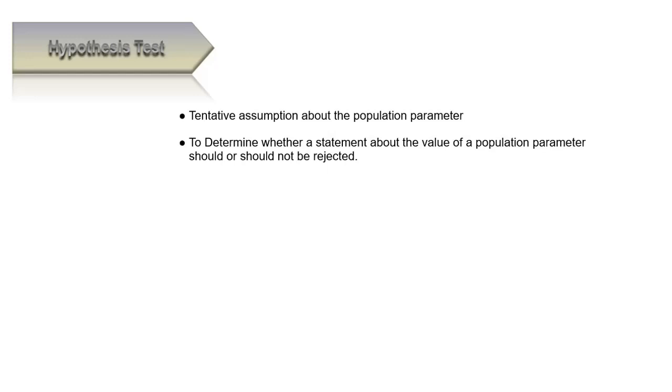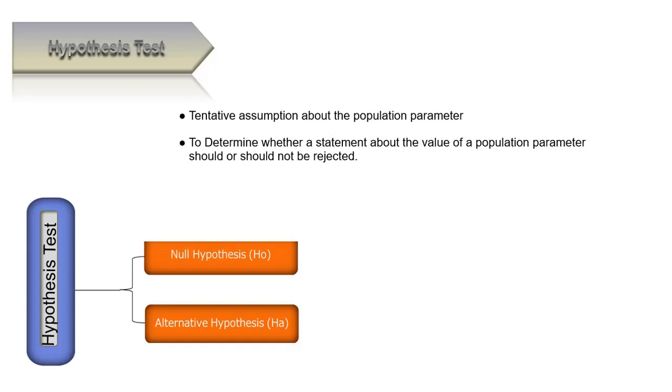Okay, let's go on the video. Hypothesis test—this hypothesis is one of the statistical analysis methods. It's making a tentative assumption about the population parameter. So this hypothesis testing can be used to determine whether a statement about the value of the population parameter should or should not be rejected.